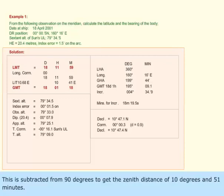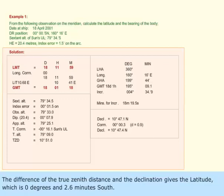This is subtracted from 90 degrees to get the zenith distance of 10 degrees and 51 minutes. Difference of true zenith distance and the declination gives the latitude, which is 0 degrees and 2.6 minutes south.